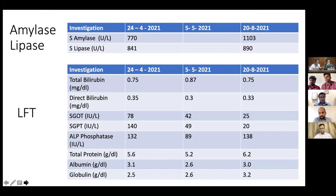Just for the sake of all residents: I have a problem with the word 'transaminitis' because 'itis' means inflammation, and transaminases are not organs — they do not get inflamed. We should avoid that word. It's just a misnomer. Just say elevated transaminases — AST, ALT elevation. There is no guideline, but lipase alone is sufficient for diagnosing acute pancreatitis. You don't need to do both amylase and lipase. Lipase takes care of both early and late presentations.